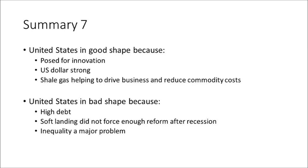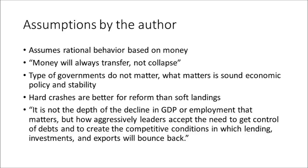Sharma also writes that the U.S. is in bad shape because of high debt, and that the soft landing after 2008 did not force enough reform after the recession. He also says inequality is a major problem, both in the U.S. and in other nations. Sharma's assumptions include: rational behavior is based on money, money will always transfer rather than collapse, type of government does not matter — what matters is sound economic policy and stability, and hard crashes are better for reform than soft landings. His key quote: 'It is not the depth of the decline in GDP or employment that matters, but how aggressively leaders accept the need to get control of debts and to create the competitive conditions in which lending, investments, and exports will bounce back.'